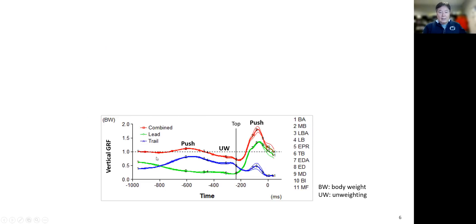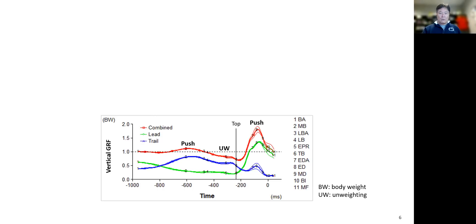The graph shows the magnitude of the vertical ground reaction force, with the unit being body weight. Initially at the beginning of the backswing, the vertical ground reaction force is close to one body weight. The red line is the combined ground reaction force, the green is the lead foot, and blue is the trail foot.